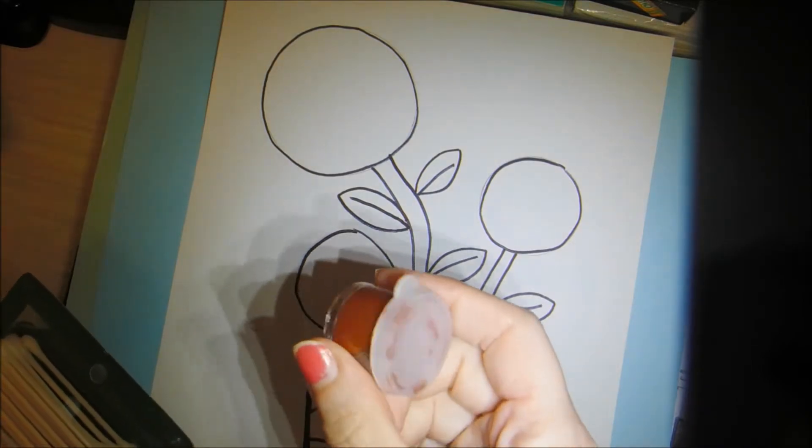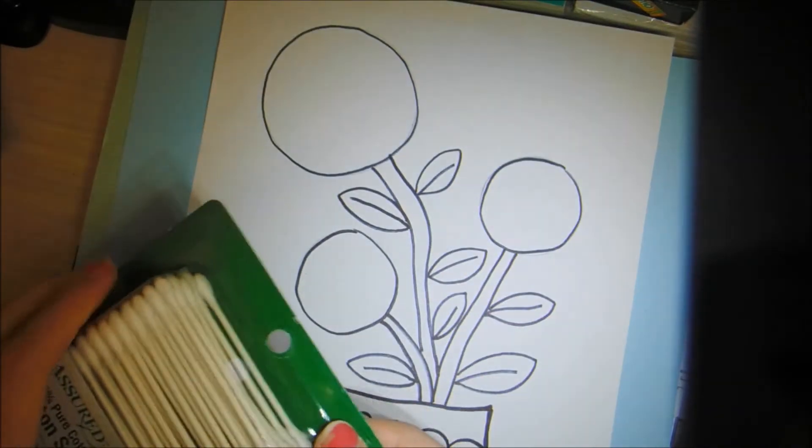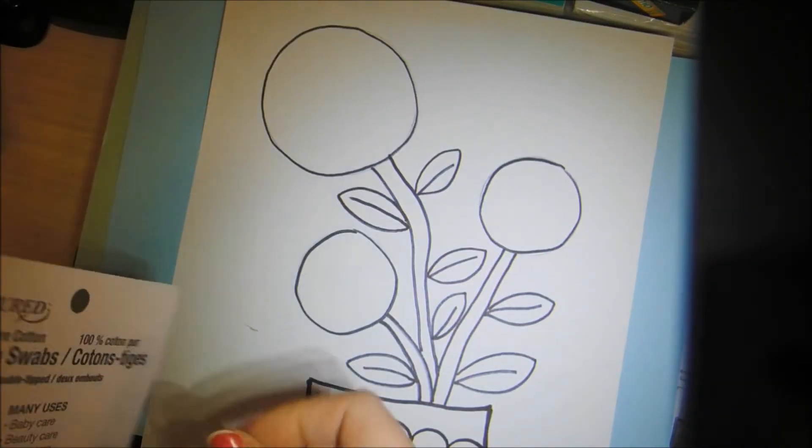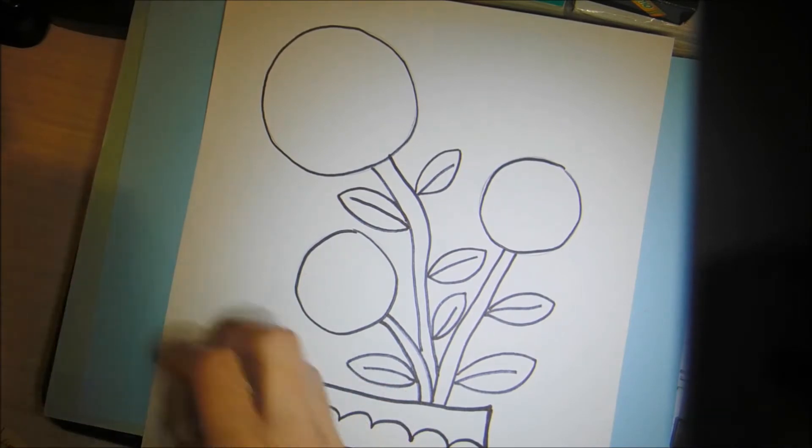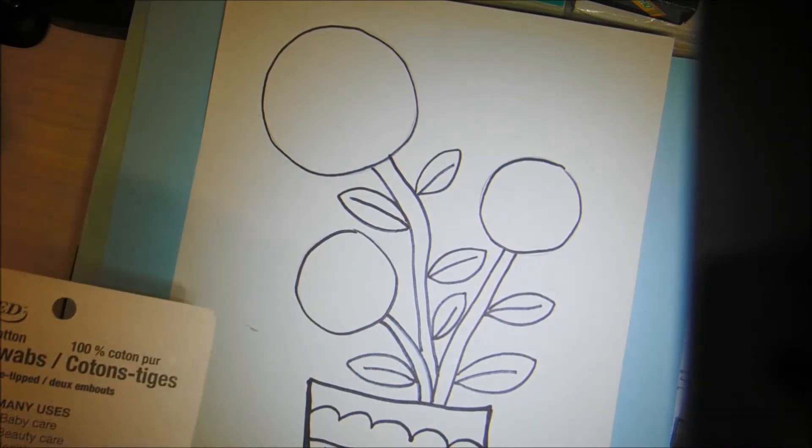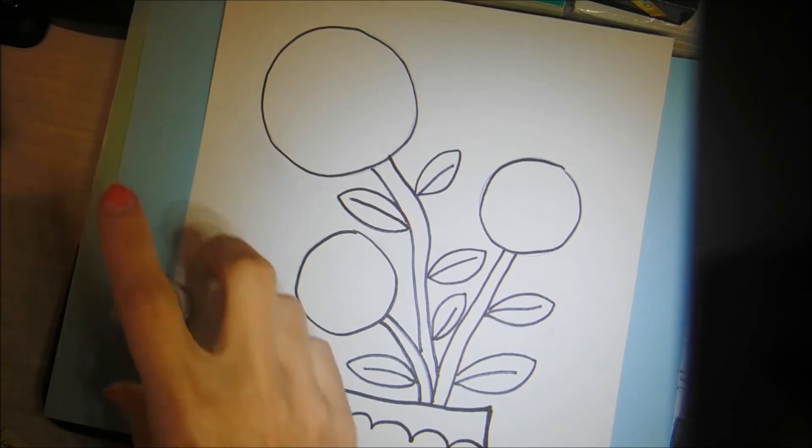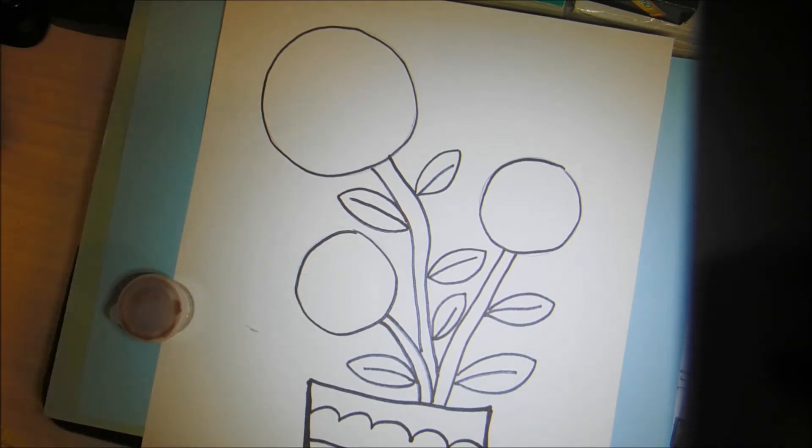Today you're going to be needing brown paint and a Q-tip. If you don't have this, you could also use a paintbrush or a brown marker. We're going to go ahead and create the inside of the sunflowers. We're going to be making the sunflower seeds.